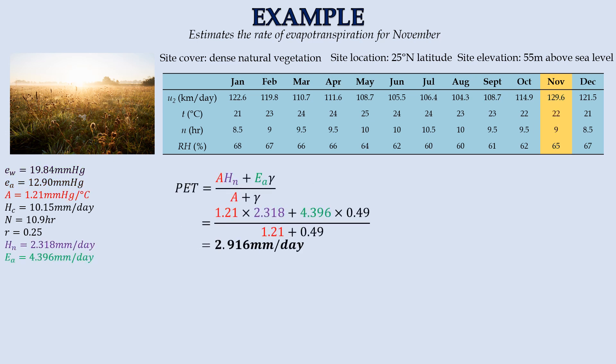At this point, we are good to estimate the PET. Under these conditions, the site potentially released 2.916 mm of water per day via evapotranspiration.